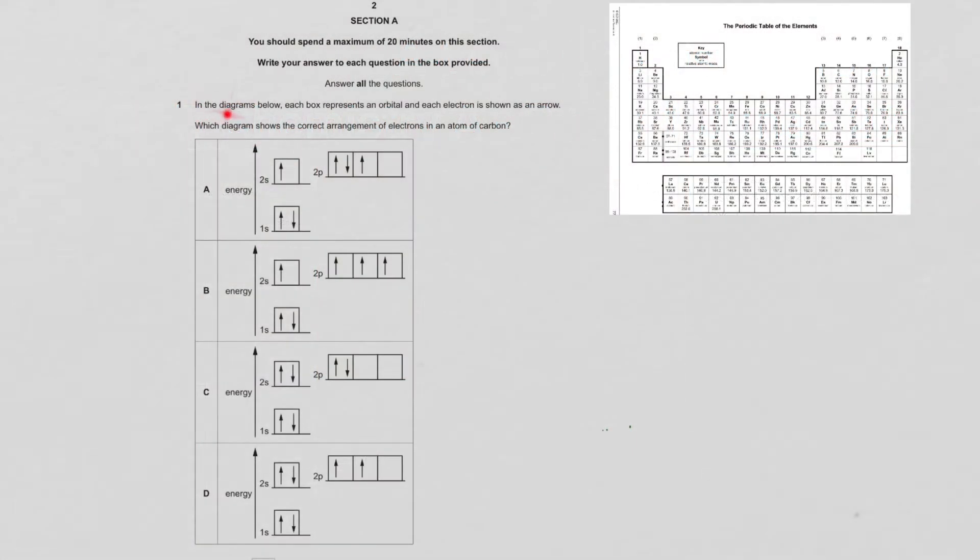Question 1. In the diagram below, each box represents an orbital and each electron is shown as an arrow. Which diagram shows the correct arrangement of electrons in an atom of carbon? Carbon has six electrons in its shells, with four electrons in the outer shell and two in the inner shell.